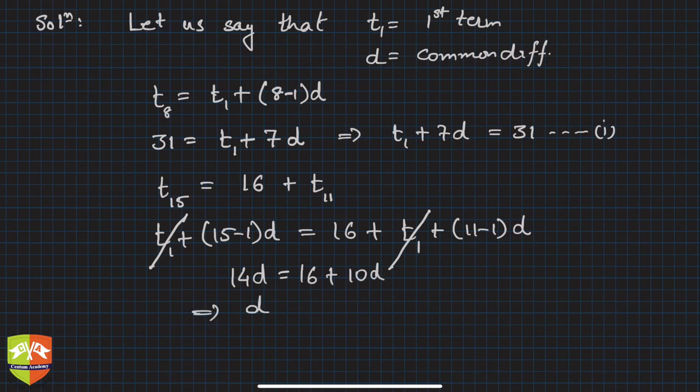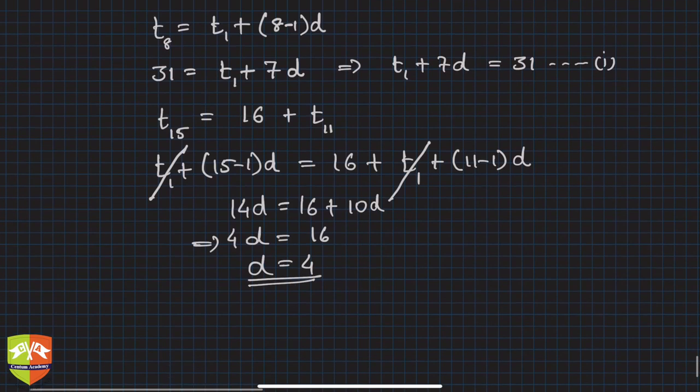So friends, you have got one information that common difference is 4. So you can find out t₁ now from any of the equations. Let's take equation 1. From equation 1, t₁ will be 31 minus 7d, which is 7